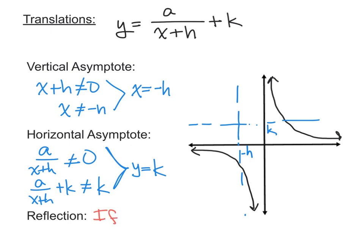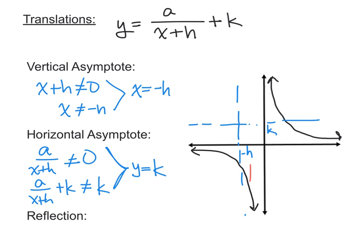The last thing to worry about is a reflection. Just like before, that's going to happen if a is negative. If a is negative, the graph is reflected over the x-axis. So instead of having branches in the upper right and lower left quadrants, they'll be in the lower right and upper left quadrants, still approaching each asymptote.